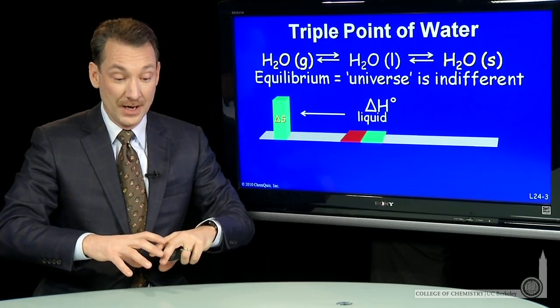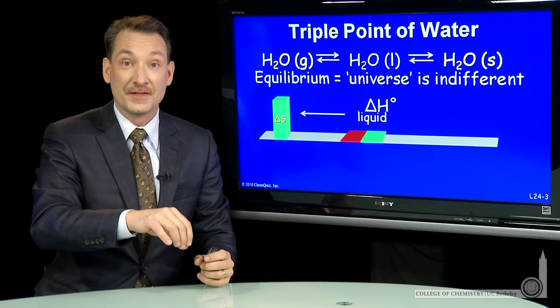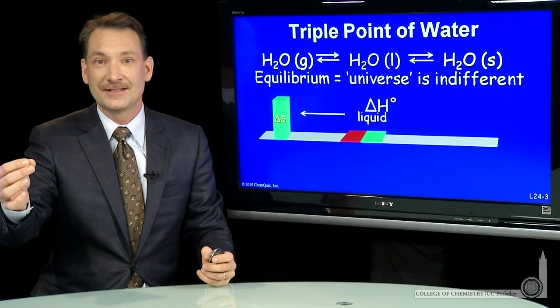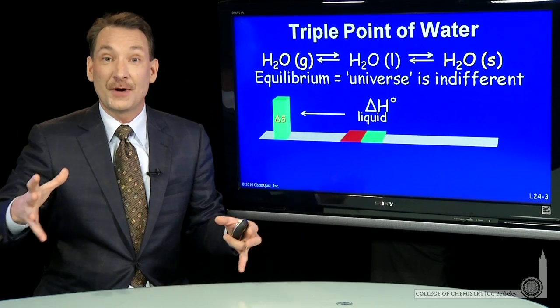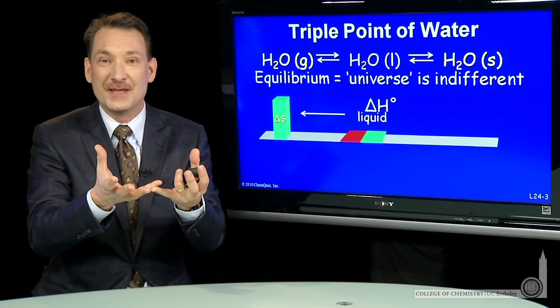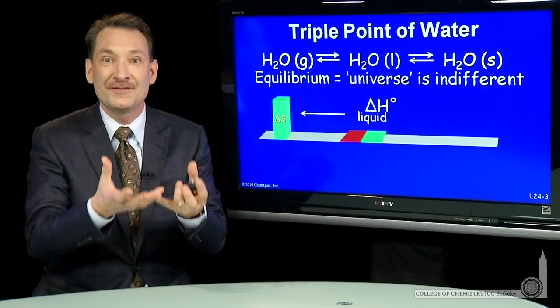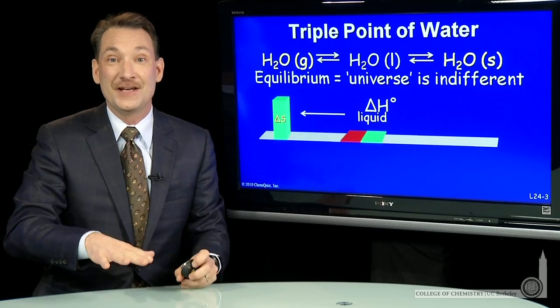As you evaporate, as you go from the liquid to the gas, you have to absorb energy. So the surroundings give up some heat. As the surroundings give up heat to the system, the entropy of the surroundings decreases.